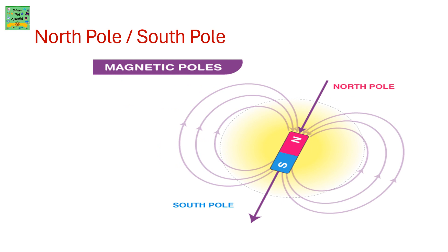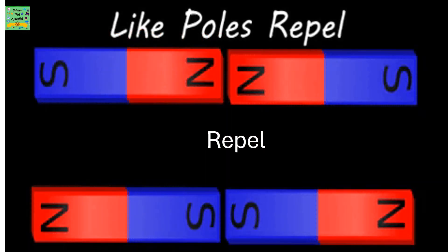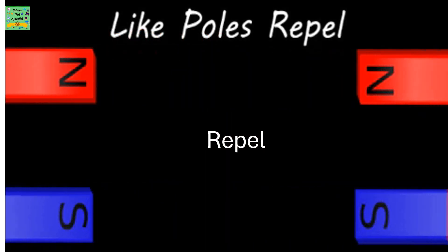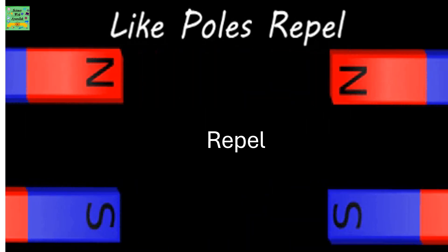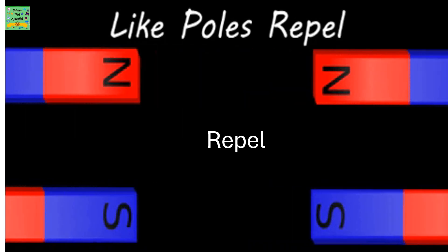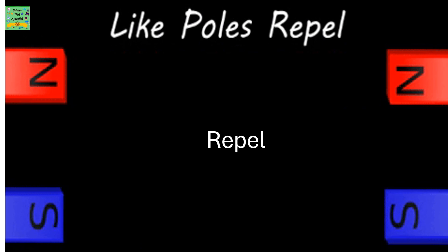Magnetic poles: north pole or south pole. Like poles repel — two sides of a magnet, if they are the same, they repel.